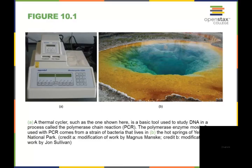The polymerase enzyme most often used with PCR actually comes from a strain of bacteria that lives in the hot springs at Yellowstone National Park. Here's a picture of those hot springs.